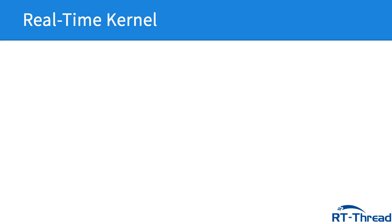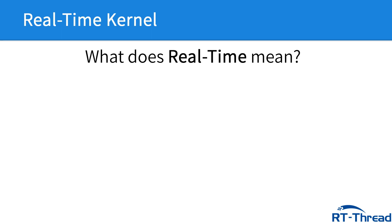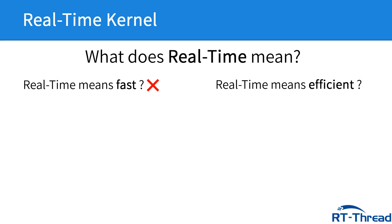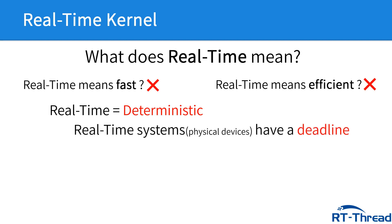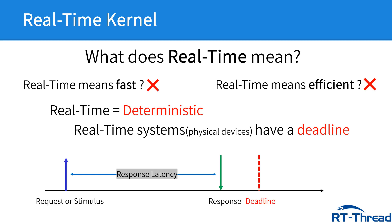A real-time kernel is a kind of software that manages the time and resources of a microprocessor, microcontroller, or digital signal processor. Here's a question: what is the exact definition of real-time? Does real-time mean faster? No. Does real-time mean more efficient? No. Actually, real-time means deterministic. Real-time systems have a deadline, especially for hard real-time systems. In many cases, missing a deadline often results in catastrophe, which may even involve human lives.